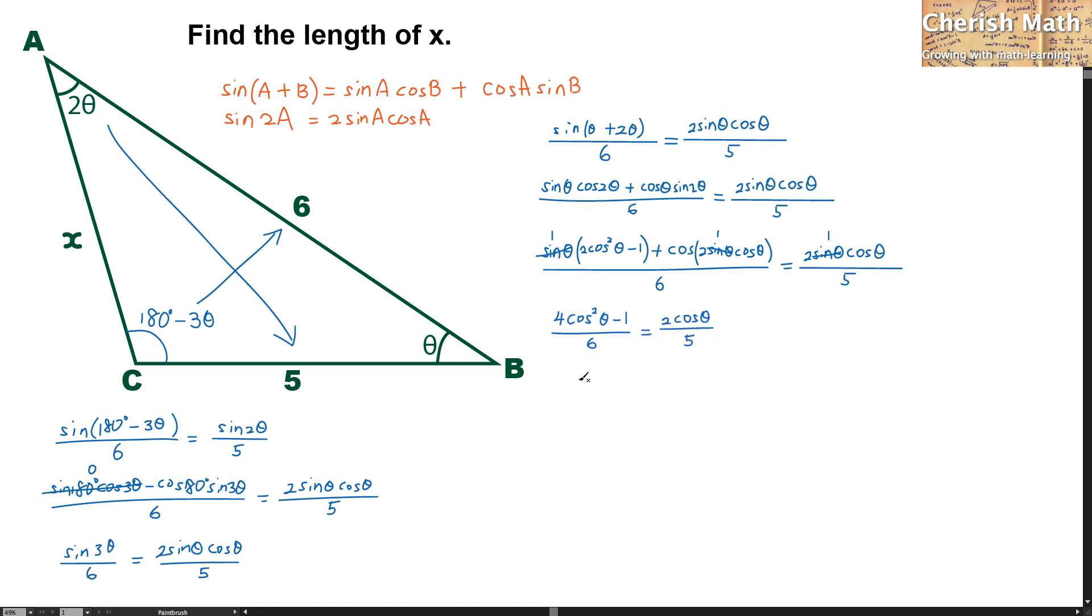And rearrange one more time. It turns 20 cos squared theta minus 12 cos theta minus 5 equals 0.